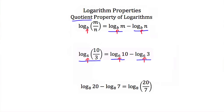This works in the other direction as well. Here we have the log of twenty minus the log of seven. The first thing you have to check is that these have the same base — which they do, base eight. So the log of twenty minus the log of seven is just the log of twenty divided by seven, and we keep our base of eight.